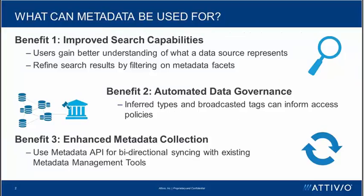So what can this metadata be used for? One of the most prominent benefits is the improved search capabilities it provides. When users go to a semantic catalog like the one Atibio provides, they may search for a term and get a good number of hits back, but they might not understand what each of those data sources actually represents. Metadata can help them better understand what those sources are, and they can use metadata — both system-generated and user-generated — to refine their search results and filter on the facets available thanks to that metadata.